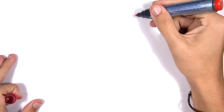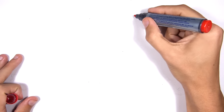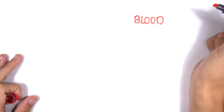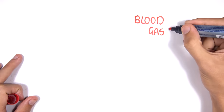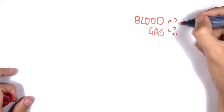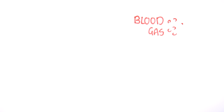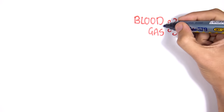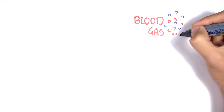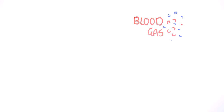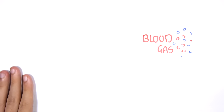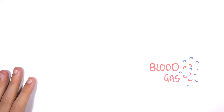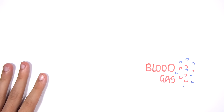In this video we're going to talk about blood gases, so gases in the blood, specifically focusing on oxygen and carbon dioxide. We're looking at the concentrations of these gases in our lungs, the blood and the tissues. By concentration I mean the partial pressure — the higher the partial pressure of a gas in an area, the higher the amount of that gas in that area.